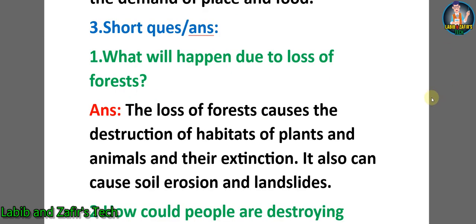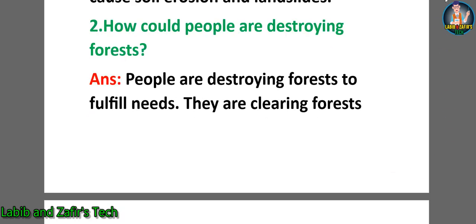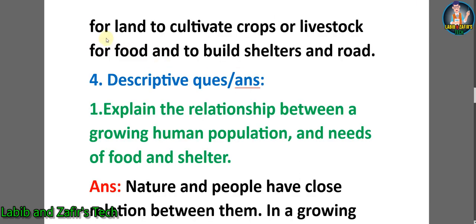Question number one: what will happen due to loss of forest? Answer: the loss of forest causes the destruction of habitats of plants and animals and their extinction. It also can cause soil erosion and landslides. Number two: how could people are destroying forest? Answer: people are destroying forest to fulfill needs. They are clearing forest for land to cultivate crops or livestock for food and to build shelters and roads.